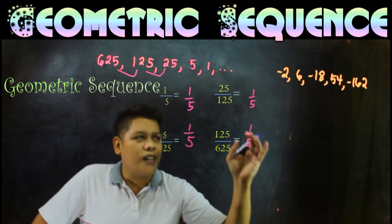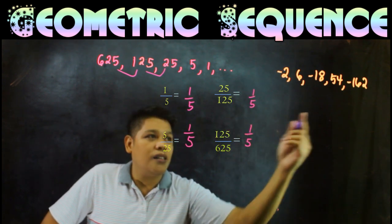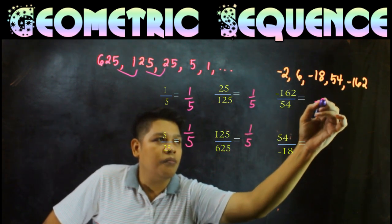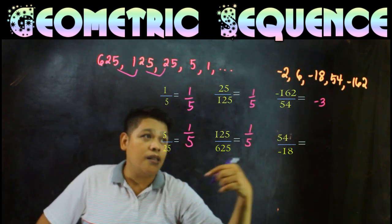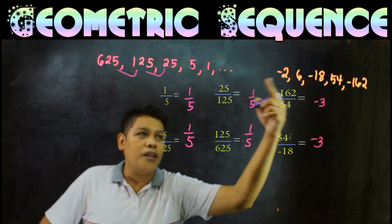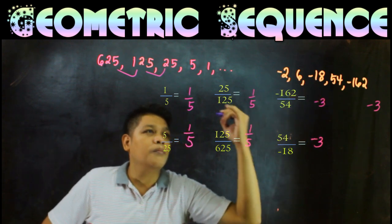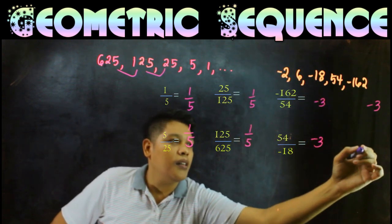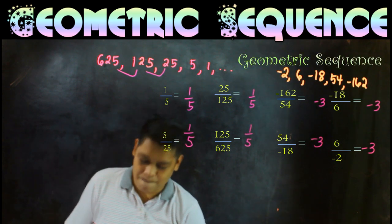Next one, negative 62 over 54 is negative 3. Then 54 divided by negative 18 is negative 3. Negative 18 divided by 6 is negative 3. And 6 divided by negative 2 is negative 3. So it's geometric with common ratio negative 3.